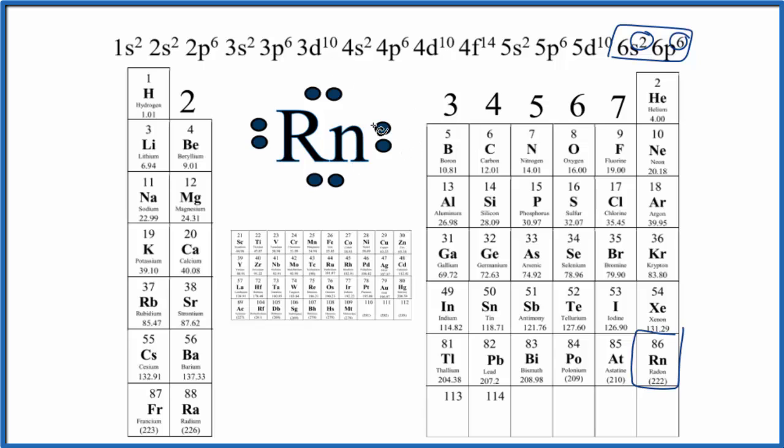So in the Lewis structure for radon, we have 8 electrons around the element symbol. This is Dr. B, and thanks for watching.